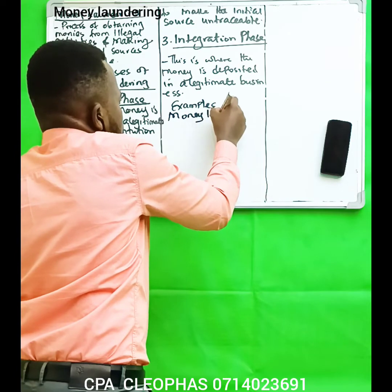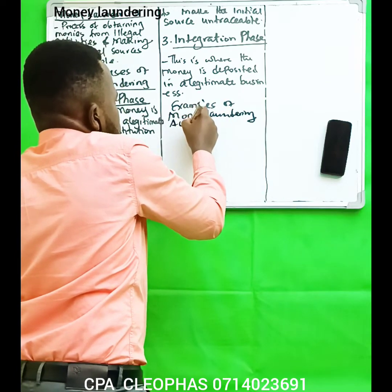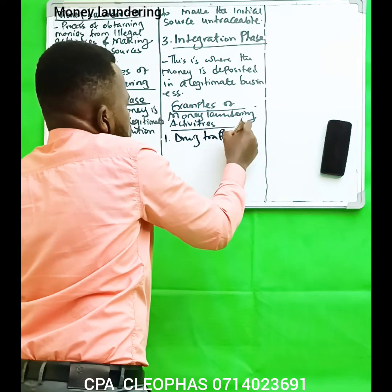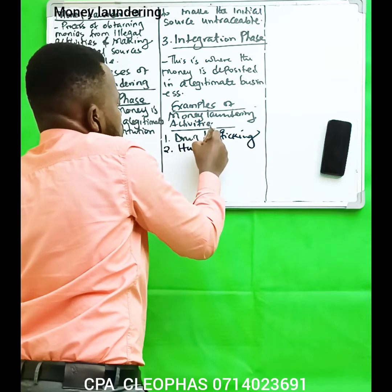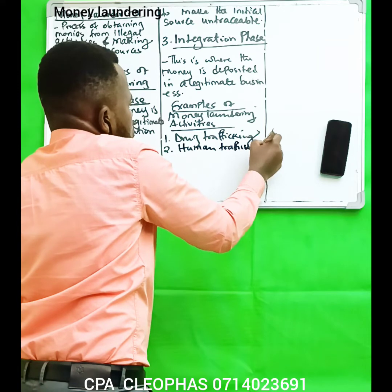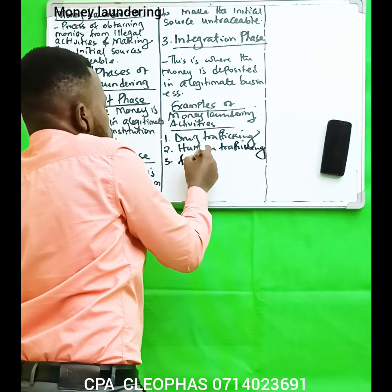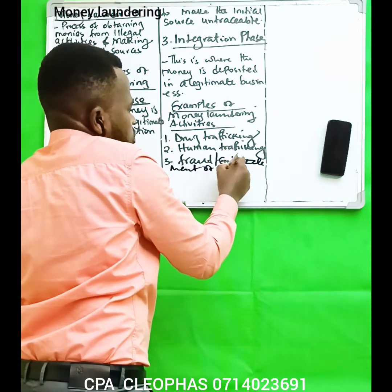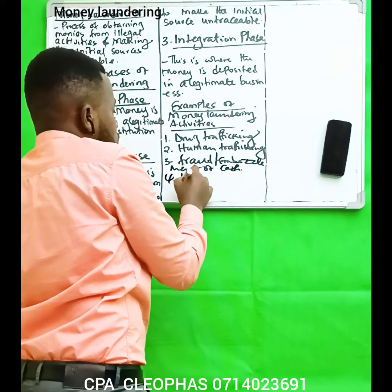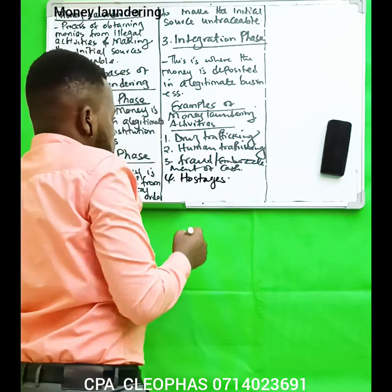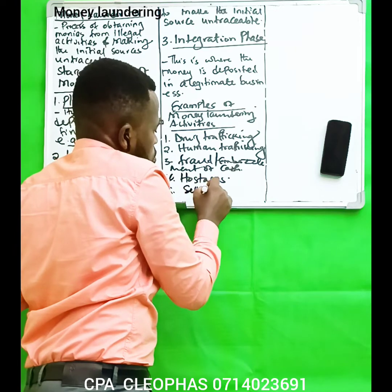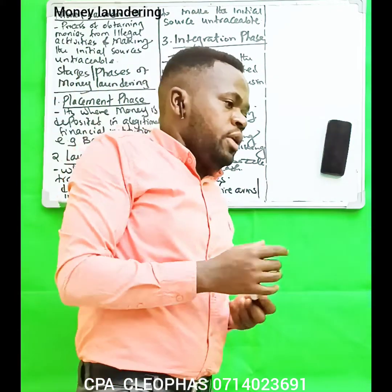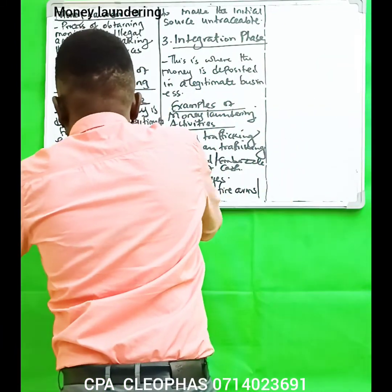Examples of money laundering activities include: drug trafficking, human trafficking, embezzlement of cash, holding hostages, and the sale of firearms. These are some of the common criminal activities that generate funds which are then laundered.